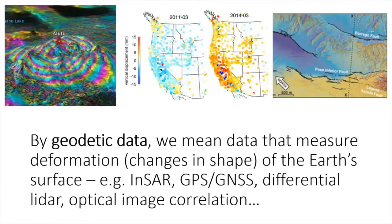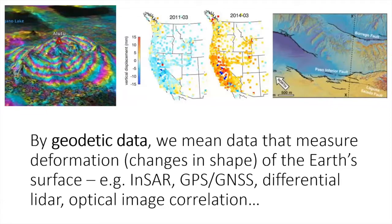On the right is differential LiDAR — another method to measure surface motion — in this case for the El Mayor–Cucapah earthquake, worked by Mike Oskin and his group, showing movement of various faults. Compared to these other methods, InSAR has a slightly different measurement. GPS is a three-dimensional measurement; if you have good vertical control you can measure all three components of displacement. Same goes for differential LiDAR potentially, but InSAR cannot — you can only measure one component of deformation.